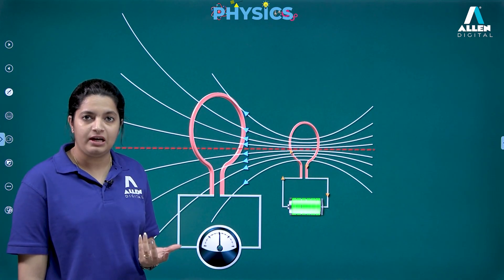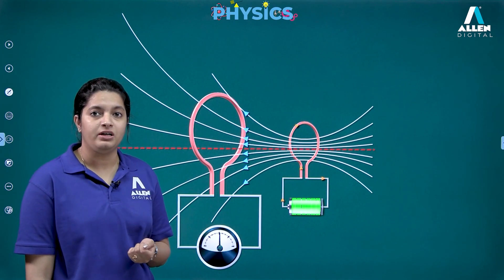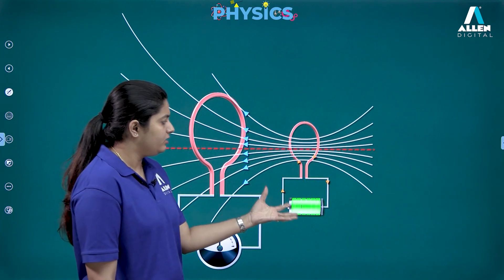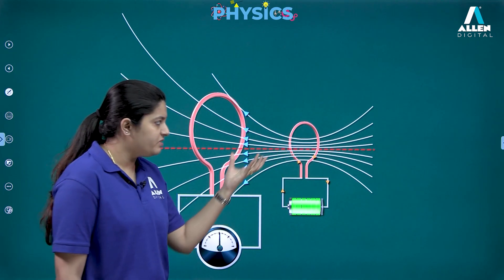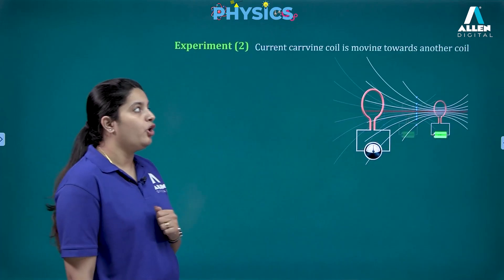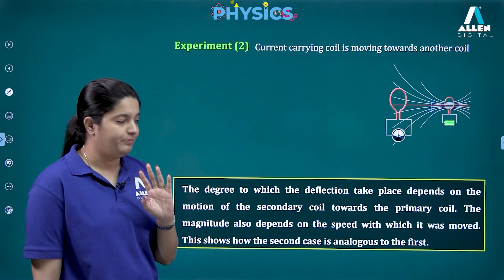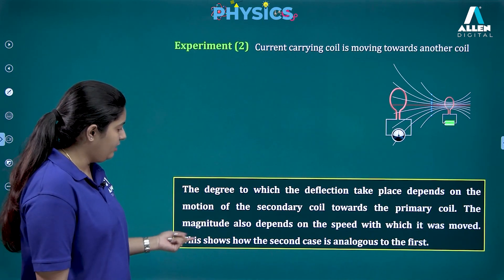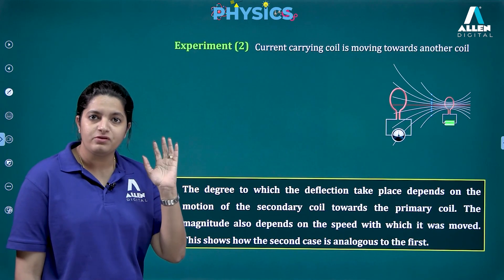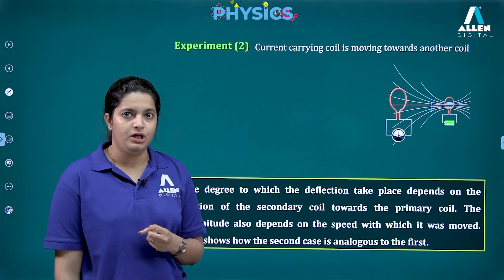He also changed the relative speed of the secondary coil with respect to the primary coil — again, larger deflection at higher speed, smaller at lower speed. The conclusion was that the degree of deflection depends on the motion of the secondary coil towards the primary coil, and the magnitude also depends on the speed. This second case was analogous to the first.